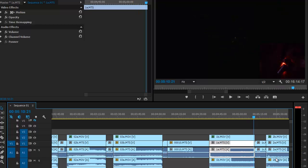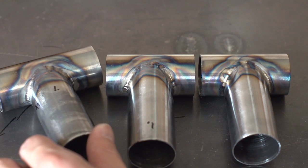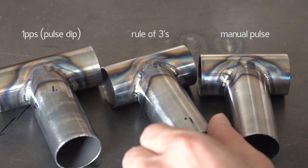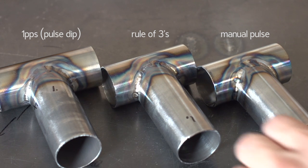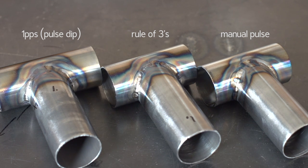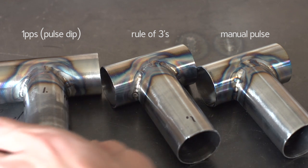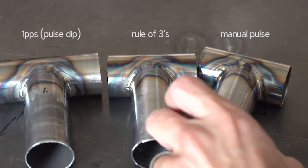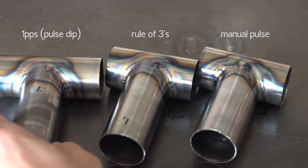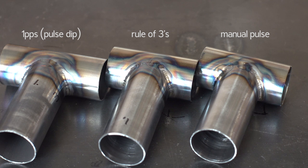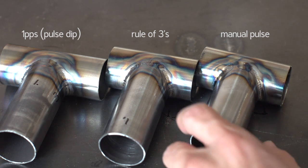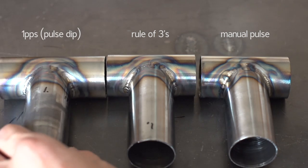Okay, here are the results. We have the one pulse per second method, the rule of threes method, and manual pulse. I think manual pulse looks pretty good for the first try and almost equal to the other two. That was the first try, so I think after more practice I could get that to look a lot better.